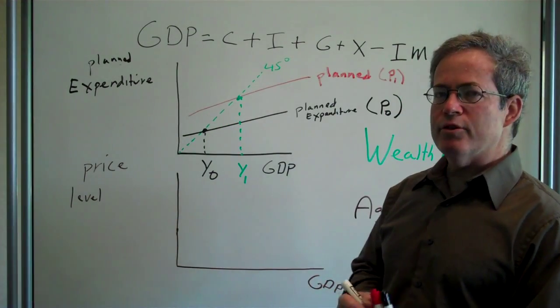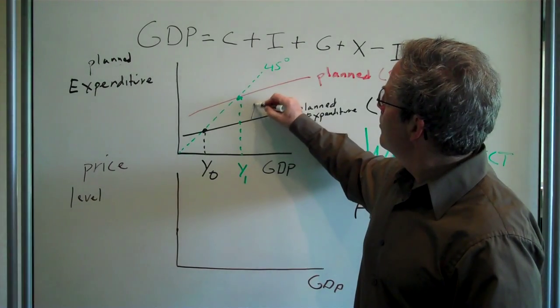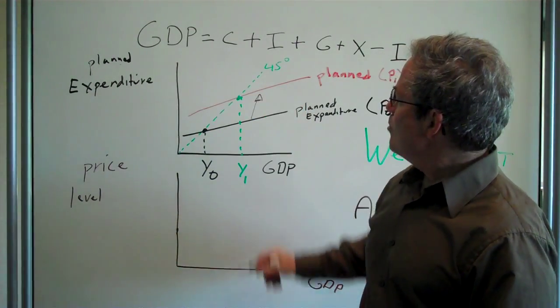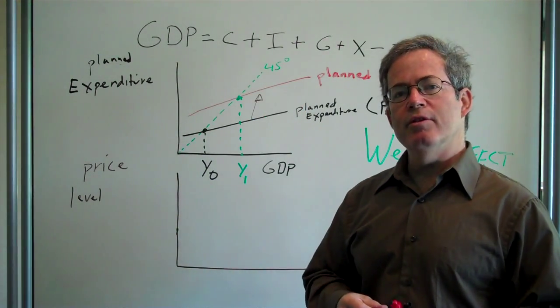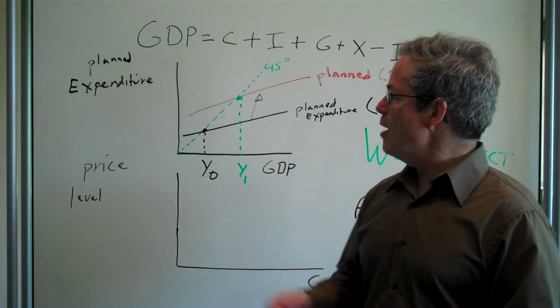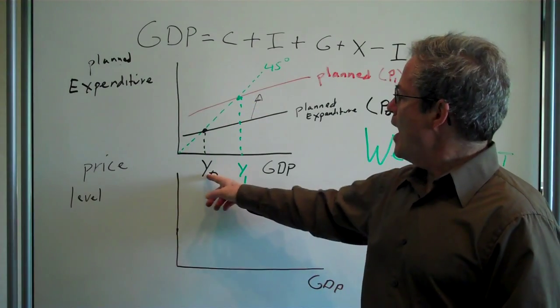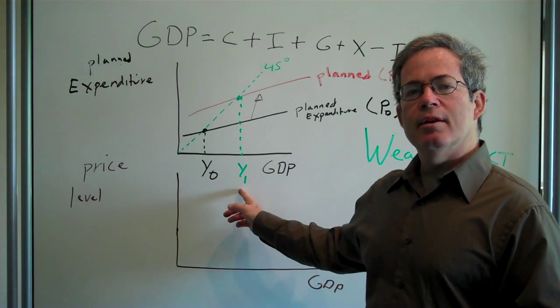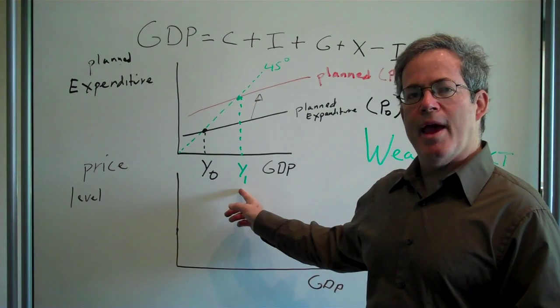So the planned expenditure line will shift up. And when your planned expenditure goes up, that means your aggregate demand goes up to here, and output demanded in the economy will expand.